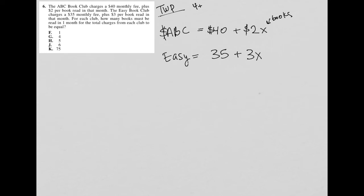For each club, how many books must be read in one month for the total charges from each club to equal? Well, because both of them have the same time frame, and I don't really need these dollar signs here, all the question is asking me or the translation of the question is, when does ABC equal easy?